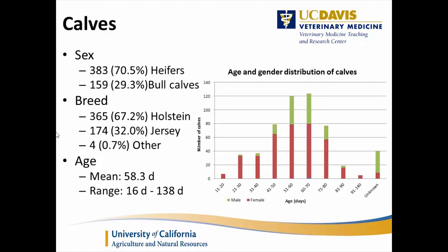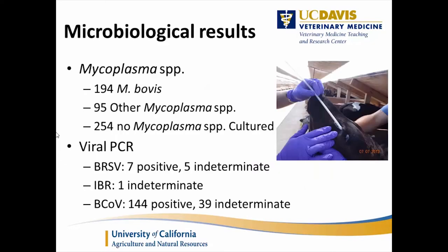The age range examined was between 16 and 138 days, with a mean of 58 days. For mycoplasma, we had 194 Mycoplasma bovis and a few other non-M. bovis species, with about half the calves not culturing any mycoplasma. For viral PCR, we had only 12 BRSV, IBR was 1, a lot of coronaviruses, and no BVD.